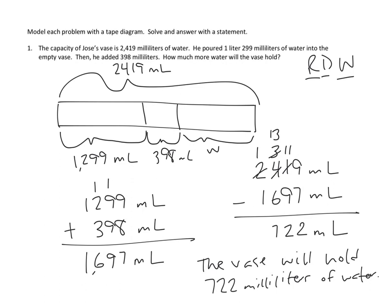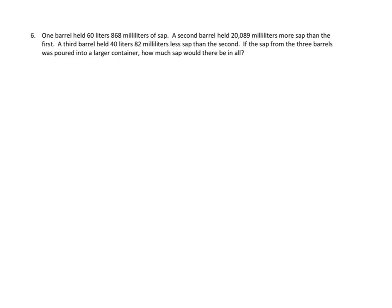Let's take a look at a second problem. As you can see, these multi-step problems are considerably more difficult. Again, we're going to use our read, draw, and write method. So let's read first. One barrel held 60 liters, 868 milliliters of sap. A second barrel held 20,089 milliliters more sap than the first. A third barrel held 40 liters, 82 milliliters less sap than the second. If the sap from the three barrels was poured into a larger container, how much sap would there be in all? Oh boy. This is complicated.